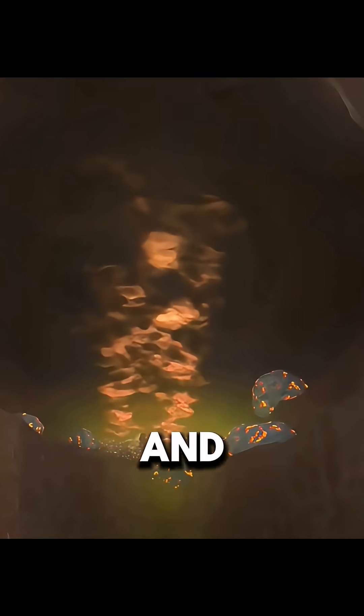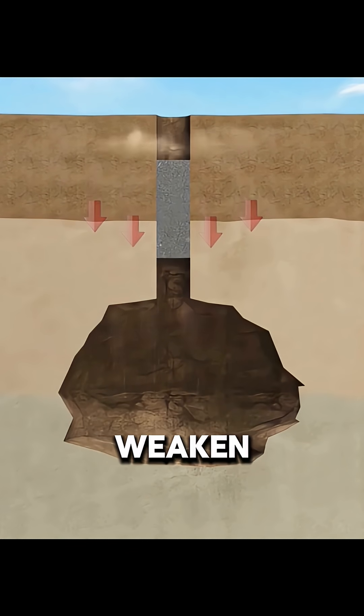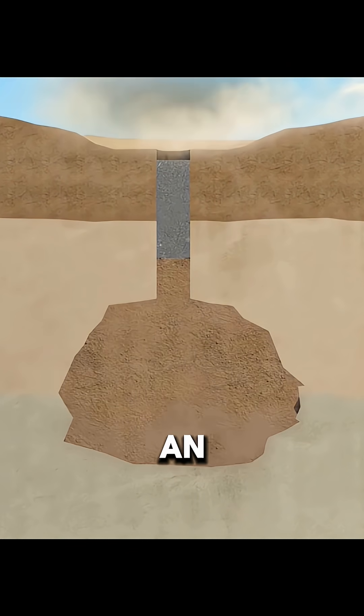As time passes, the hot gas cools and the molten rock solidifies. As temperature and pressure drop further, the rock layers supporting the cavity weaken and may collapse, creating an underground sink structure. Sometimes the ground above may sink slightly as well.